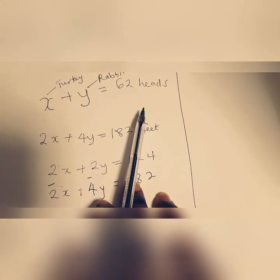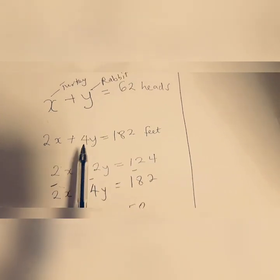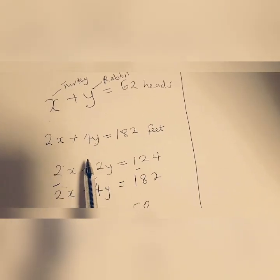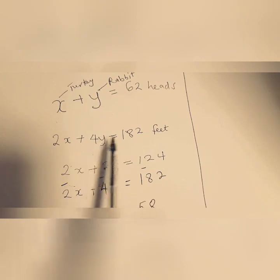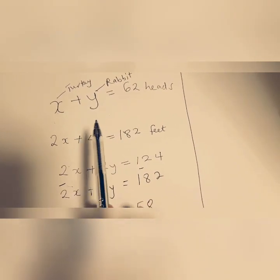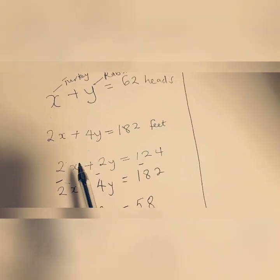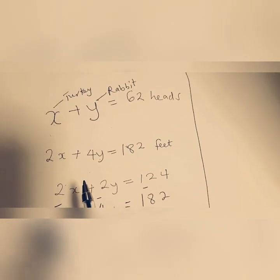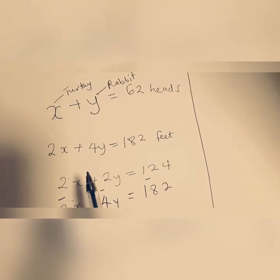So now how do we solve the problem to know how many turkeys and how many rabbits we have? This form of equations are called simultaneous equations, and so the first thing you want to do is the elimination method.